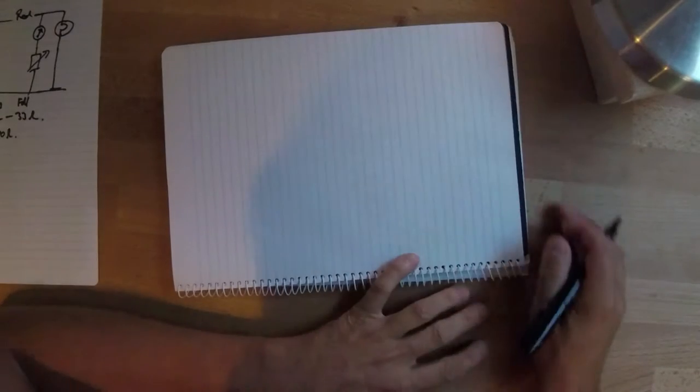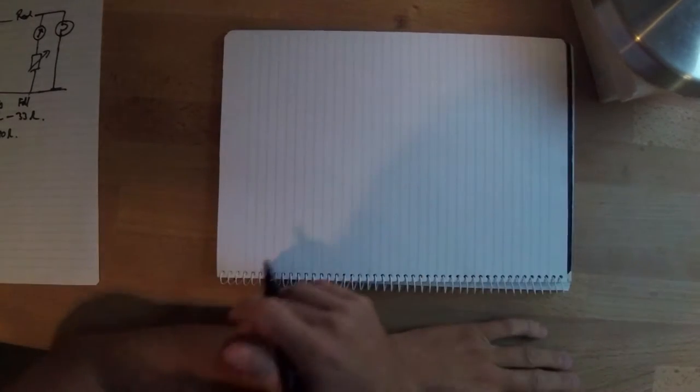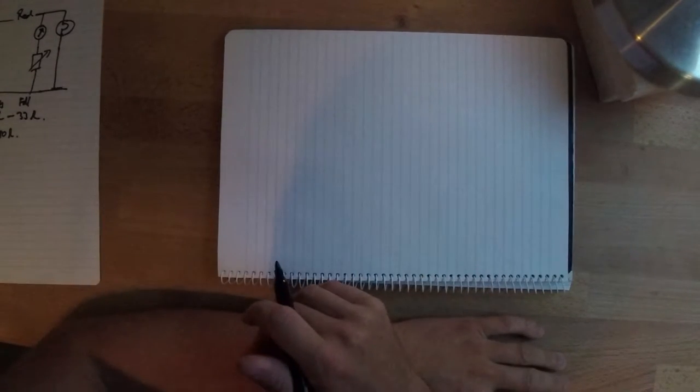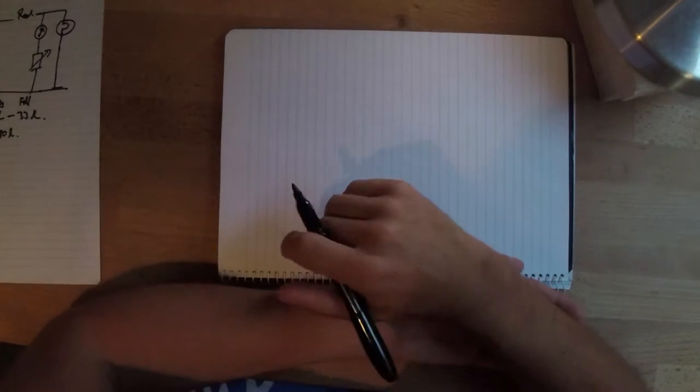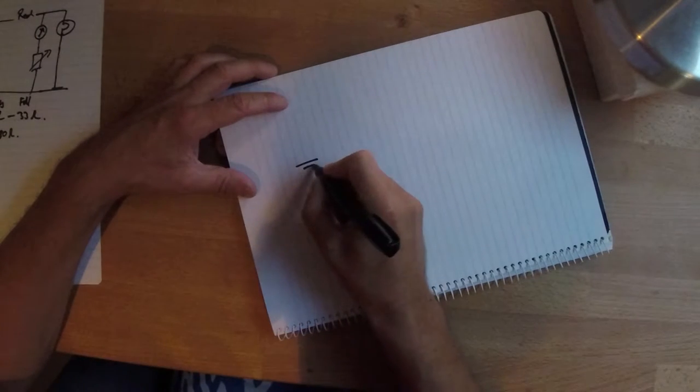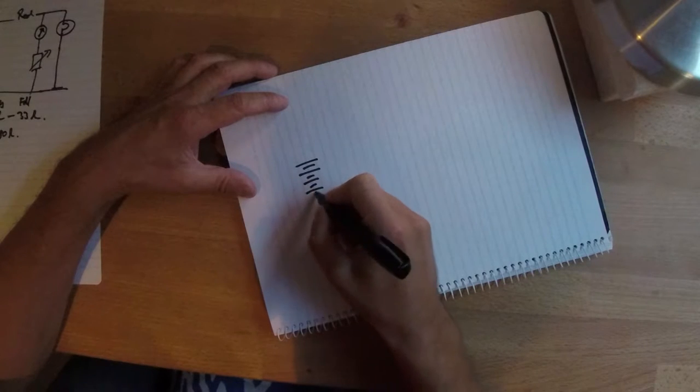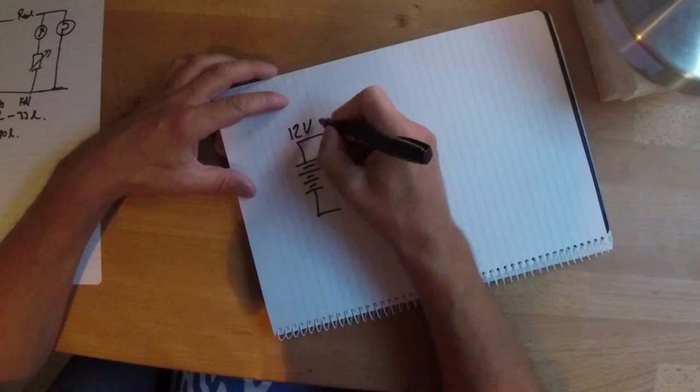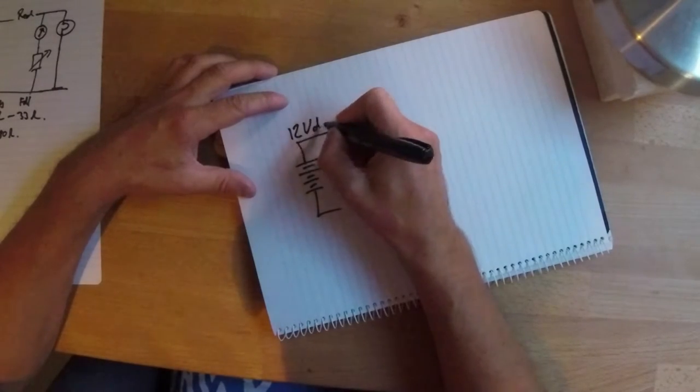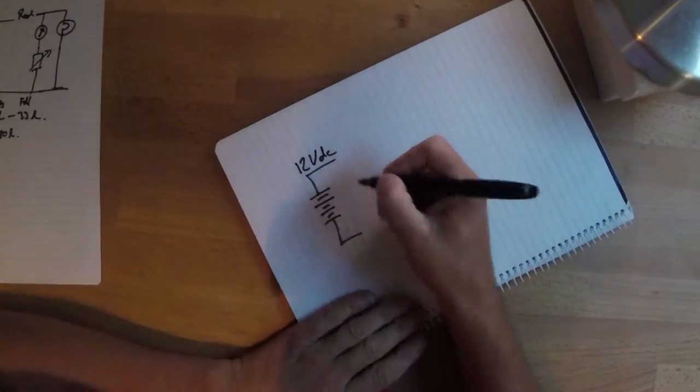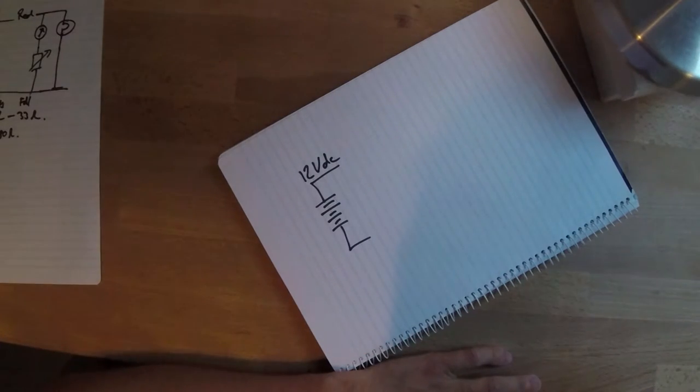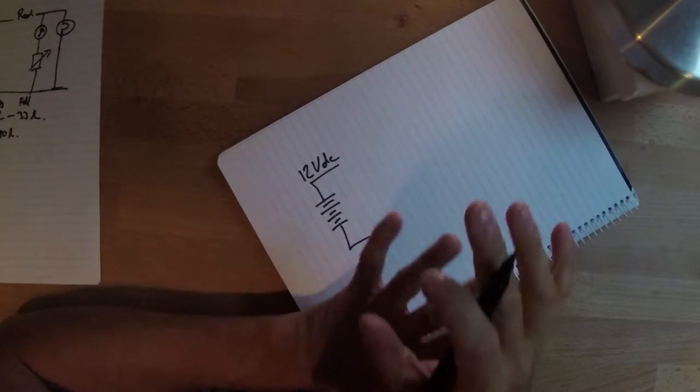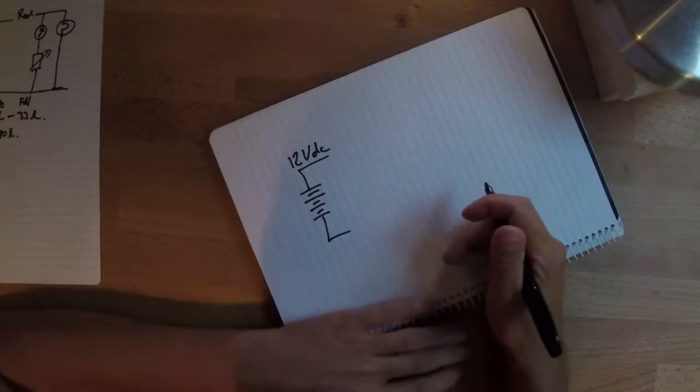So how do electrical fuel gauges work? Well, it's relatively simple. They consist of two components: a sender unit and a gauge. But let's start with the input to the system, which is your battery, typically giving you 12 volts DC. Some boats of course operate on a 24 volt system, but the majority of boats are operating on 12 volts.